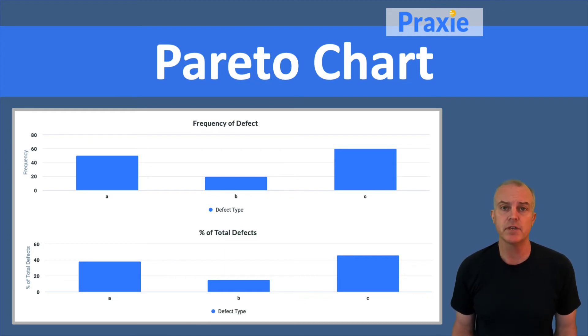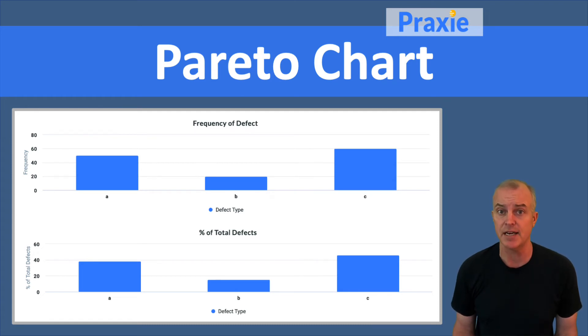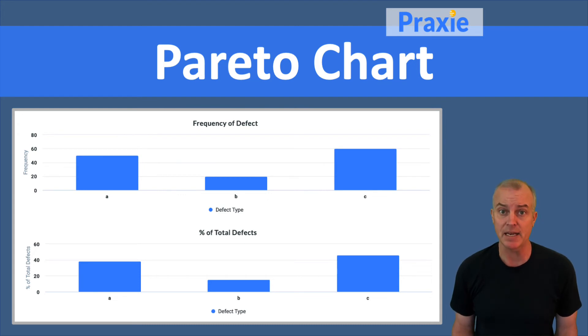If you can quantify as much as possible the frequency and percent of the total defects that a given defect represents, you can map it onto a chart.